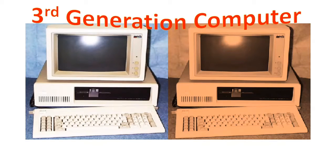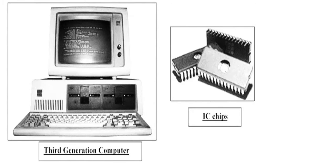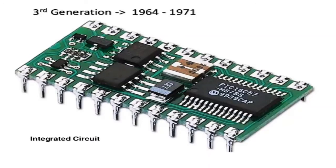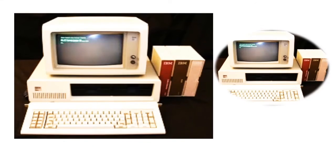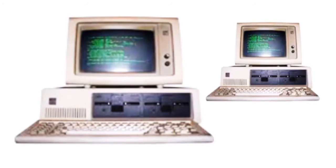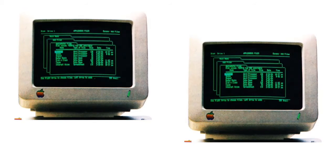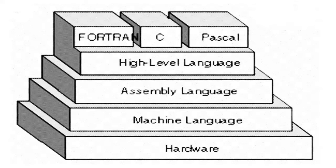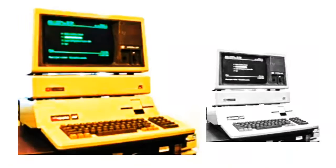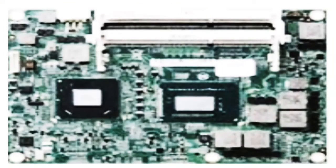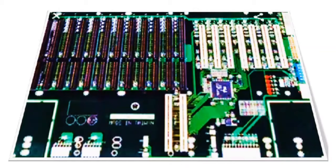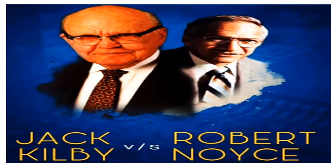Third generation. In 1964, the third generation computers were introduced. They used integrated circuits, properly known as chips. A single IC has many transistors. The computers of this generation were small in size, low cost, large memory, and processing speed is very high. Keyboards and monitors were developed during this period. They are fast and more reliable. High level language was developed. Input output devices became more sophisticated. IBM 360 and IBM 370 are examples of third generation computers. Jack Kilby and Robert Noyce, who are Americans, invented the integrated circuit, that means microchip, in 1958-59 and received the year 2000 Nobel Prize in Physics.